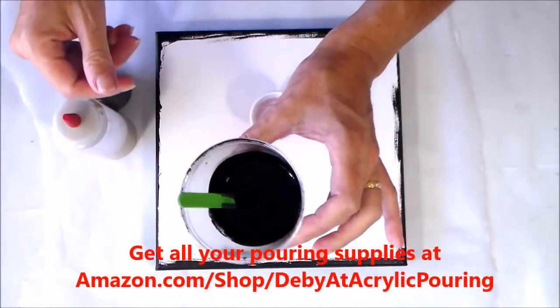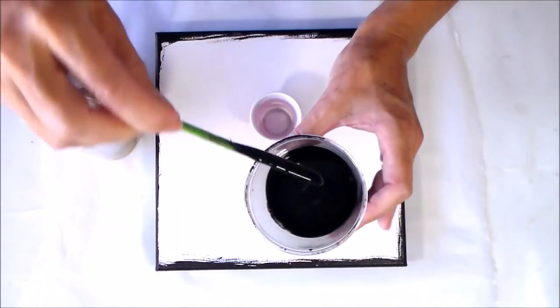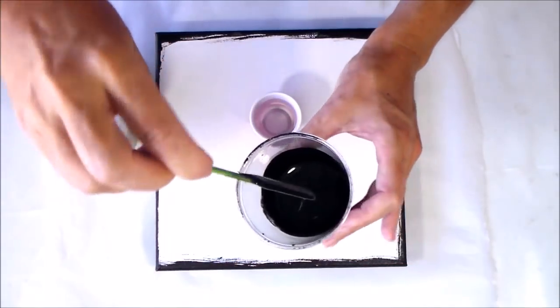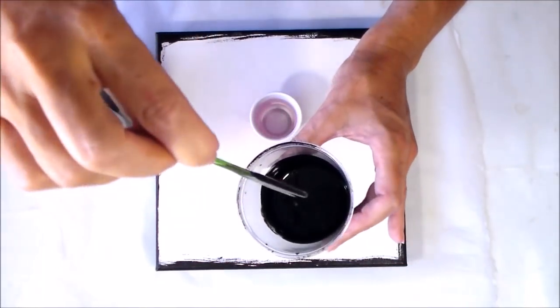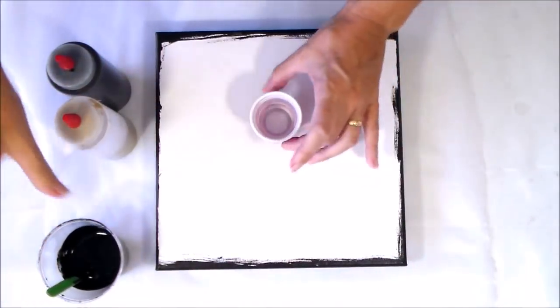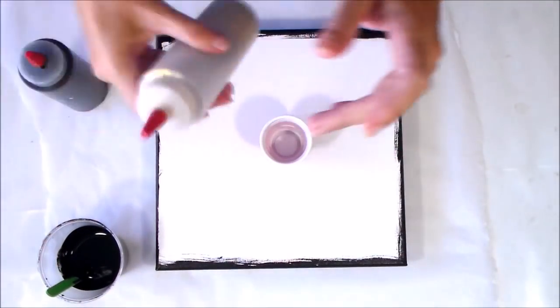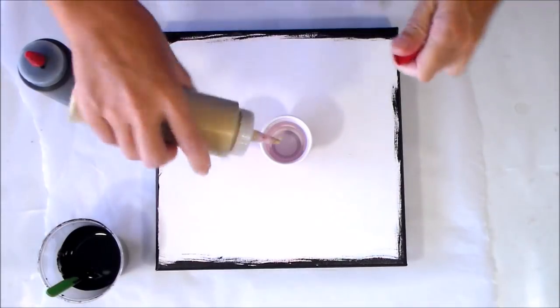Then I also have another black and this one is mixed up the same but it has no silicone in it and this is the one I'm going to use for my negative space. So I'm going to start first of all with my cup, give my bottles a quick shake and we're good to go.